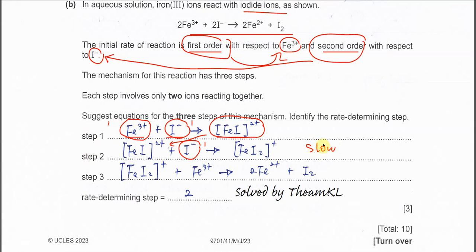In the rate-determining step, we only count the original reactants — not the intermediates. Iodide appears once in step 2 and once in step 1, so two times total — second order. Fe³⁺ appears one time only — first order. This confirms the observed rate equation.